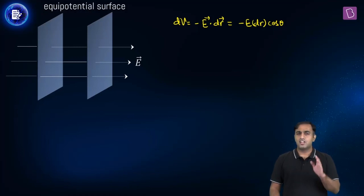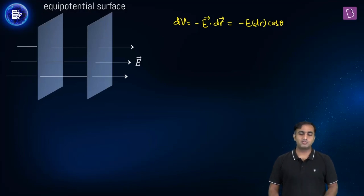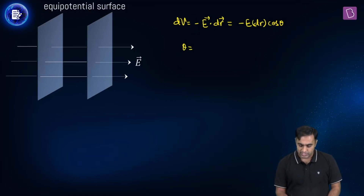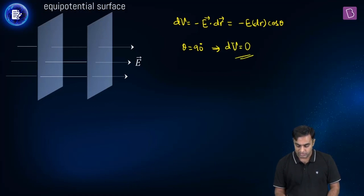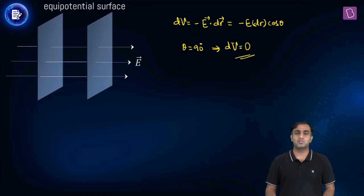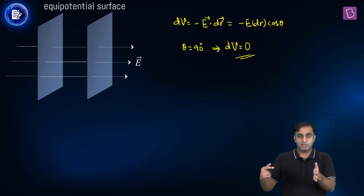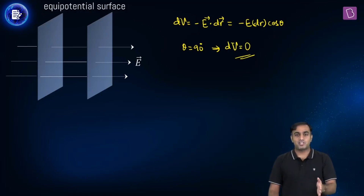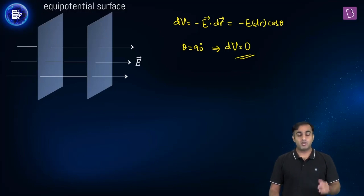Now choose a path which is perpendicular to the electric field. In that case, theta turns out to be 90 degrees, and that gives you dV equal to 0. This means all those points perpendicular to the electric field — the line of force — have the same potential, and that is exactly how you define an equipotential surface: a surface which contains all those points at the same electric potential.